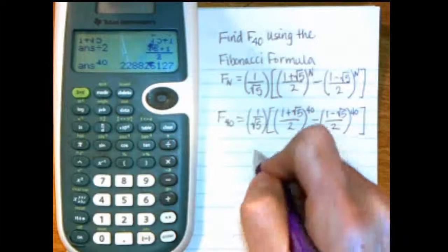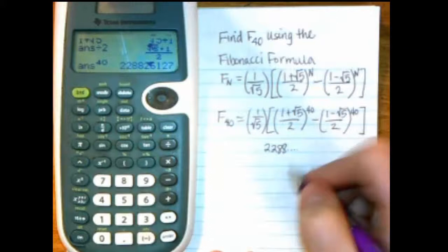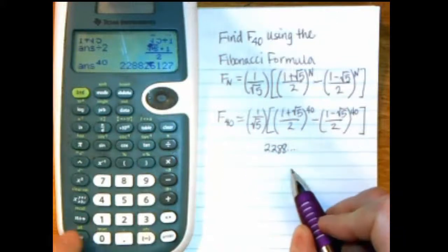And I get 2, 2, 8, 8, and it's a big number. So I'm just going to put dot, dot, dot.